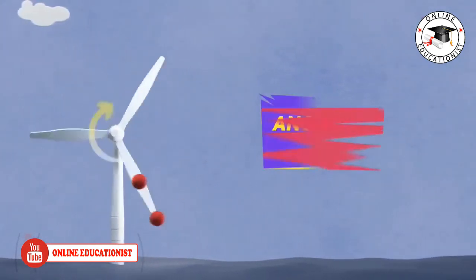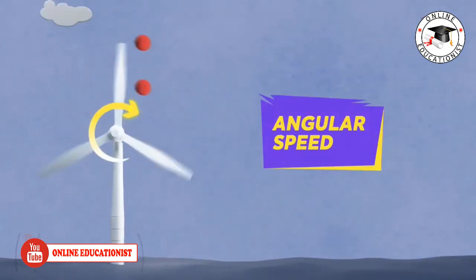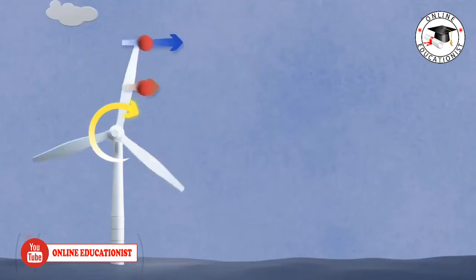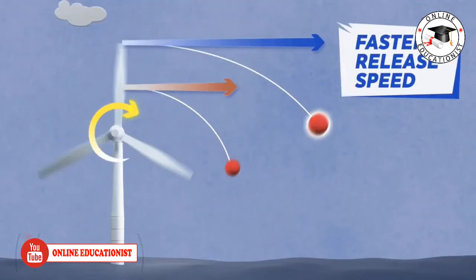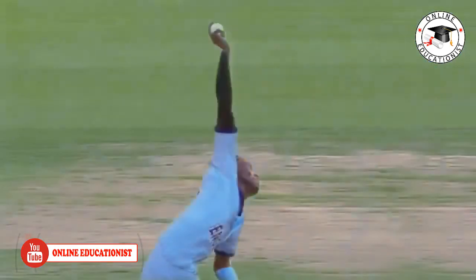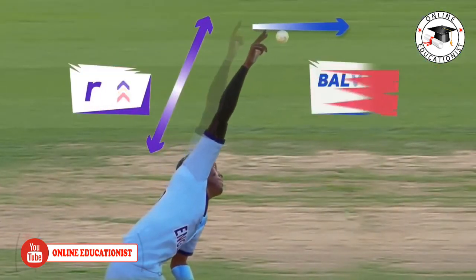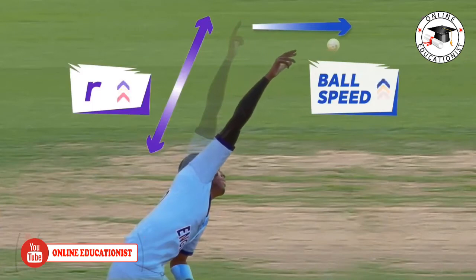When the windmill rotates, the balls get released. Which one do you think will fly off faster? Yes, the one at the edge. So, higher the R, greater the release speed of the ball.